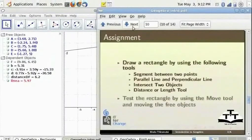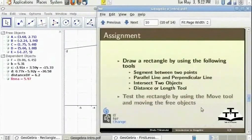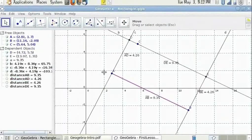Finally, test the rectangle you have constructed by using the Move tool and move the free objects. I have already constructed this assignment here. I have started with line segments AB and have constructed the rectangle ABED.